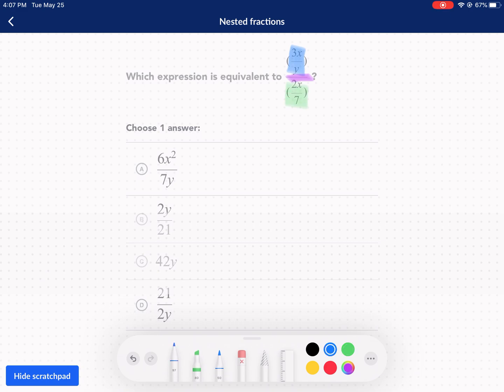So keep, we're going to keep this the same, 3x over y. Change, we're going to change division to multiplication and flip. We're going to flip this to its reciprocal. So instead of 2x over 7, it's going to be 7 over 2x. From here, you can multiply top times top, bottom times bottom, but I think it's better to cross cancel first with anything that you can cancel or reduce.